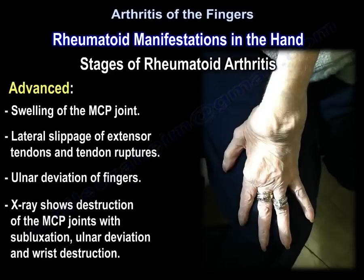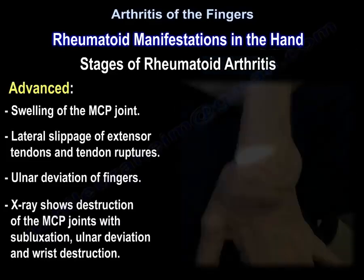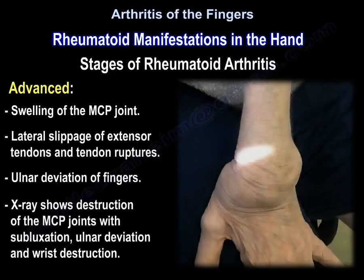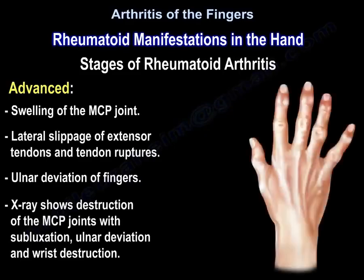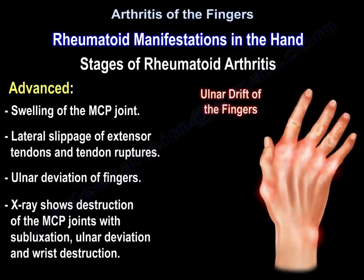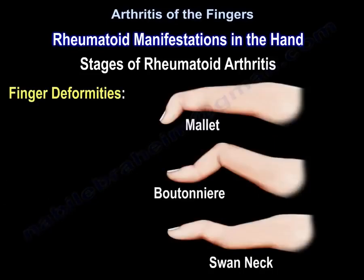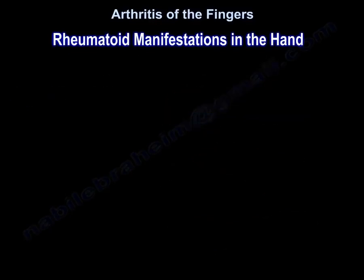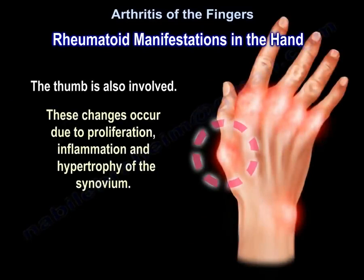The disease can also present with advanced swelling of the MCP joint, lateral slippage of the extensor tendons, and tendon ruptures. Ulnar deviation of the fingers develops; x-ray will show destruction of the MCP joints with subluxation, ulnar deviation, and wrist destruction. Finger deformities can include mallet finger, boutonniere finger, or swan neck deformity. The thumb is also involved. These changes occur due to proliferation, inflammation, and hypertrophy of the synovium.